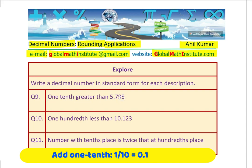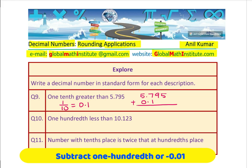One tenth greater than the given number. We are given the number five point seven nine five. One tenth means one out of ten, which equals zero point one. So that much greater means we have to add zero point one to it. When you add them, that is your answer. Always start from the right hand side and align your decimals to get the answer.